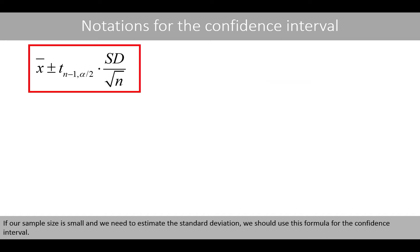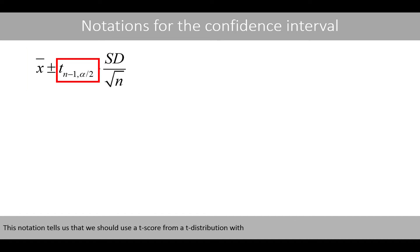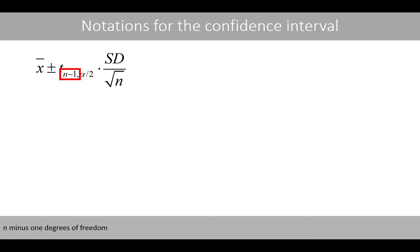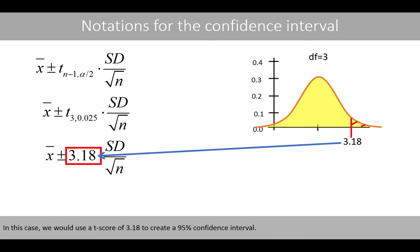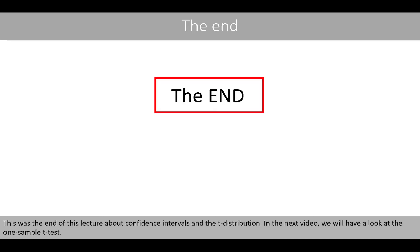If our sample size is small and we need to estimate the standard deviation, we should use this formula for the confidence interval. This notation tells us that we should use a t-score from a t-distribution with n-1 degrees of freedom for a given value of alpha. For example, if we like a 95% confidence interval and use a sample size of 4, we should extract the t-score from a t-distribution with 3 degrees of freedom that defines 2.5% of the area for the upper tail. In this case we would use a t-score of 3.18 to create a 95% confidence interval. This was the end of this lecture about confidence intervals and the t-distribution. In the next video we have a look at the one-sample t-test.